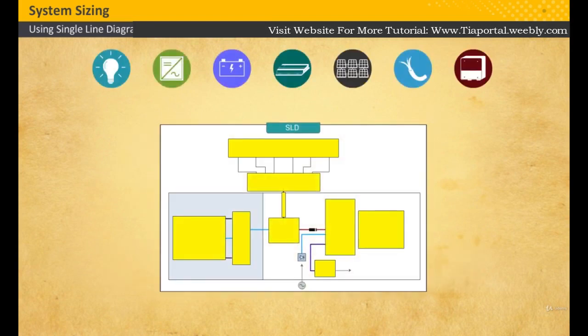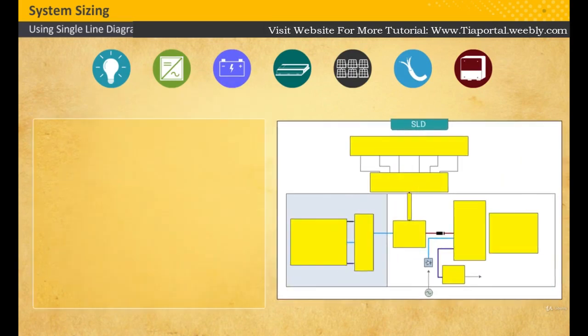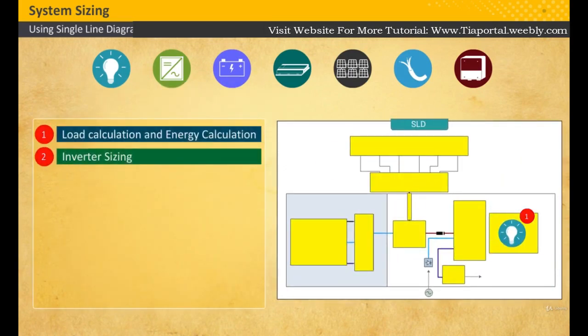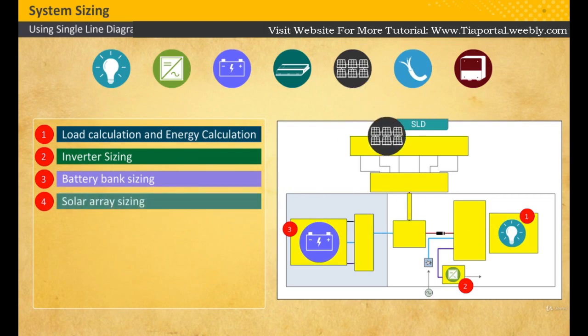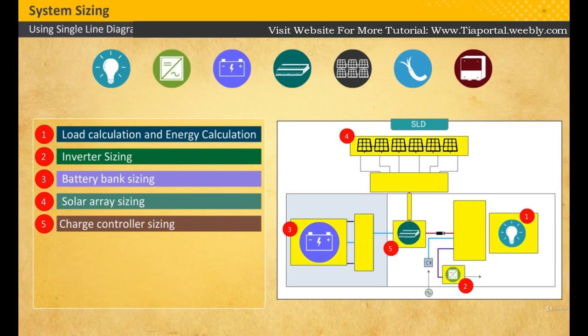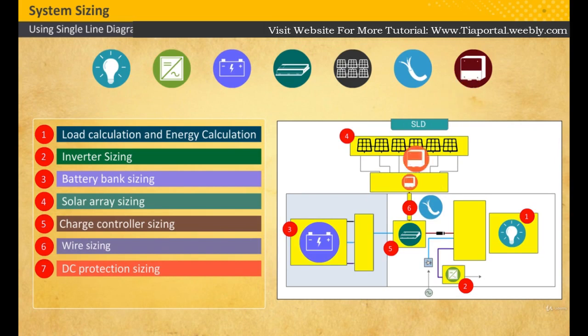Step 1: Load and energy calculation. Step 2: Inverter sizing. Step 3: Battery bank sizing. Step 4: Solar array sizing. Step 5: Charge controller sizing. Step 6: Wire sizing. Step 7: DC protection sizing. Step 8: AC protection sizing.